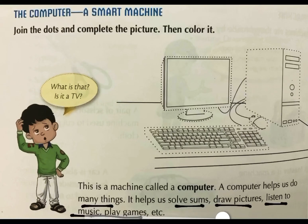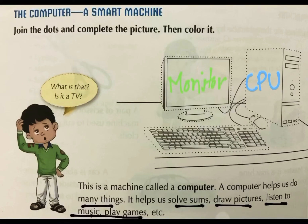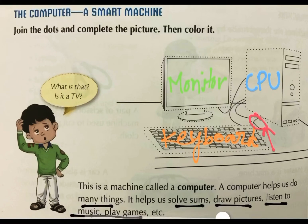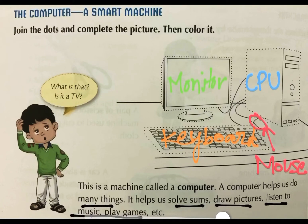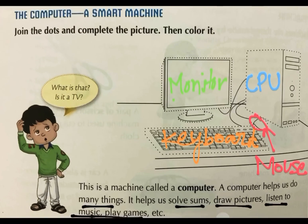Let us identify the parts of a computer. This is called CPU. This is the monitor. It is keyboard. And this small thing — it is mouse. It is always shown on the monitor.